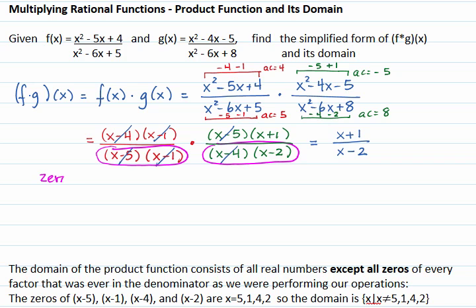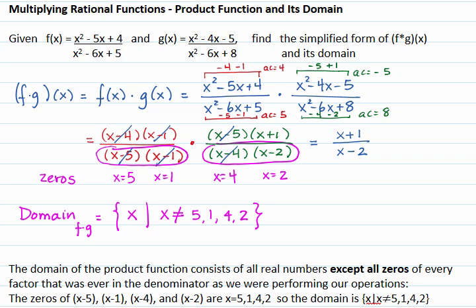The zeros of these factors are x equal to 5, x equal to 1, x equal to 4, and x equal to 2. The domain of the product function is all variables x such that x cannot equal 5, 1, 4, and 2, because division by 0 is undefined. If x takes any of these values, the expressions that were used to create the product function will be undefined.